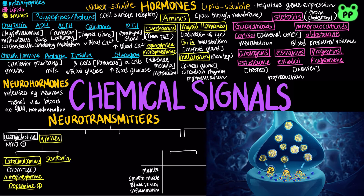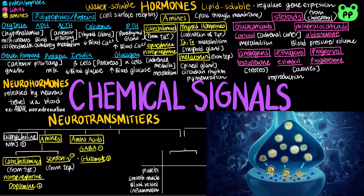Serotonin is derived from tryptophan and it is mainly inhibitory and functions in modulating mood, reward, learning, memory, and numerous physiological processes. Some amino acids are neurotransmitters. GABA, which stands for gamma-aminobutyric acid, is the primary inhibitory neurotransmitter in the brain, whereas glutamate is the major excitatory neurotransmitter in our brain. Glycine is an inhibitory neurotransmitter that participates in the processing of motor and sensory information.